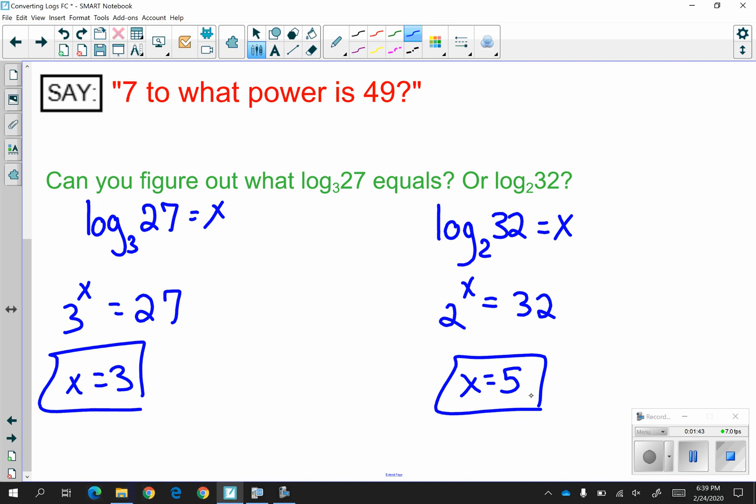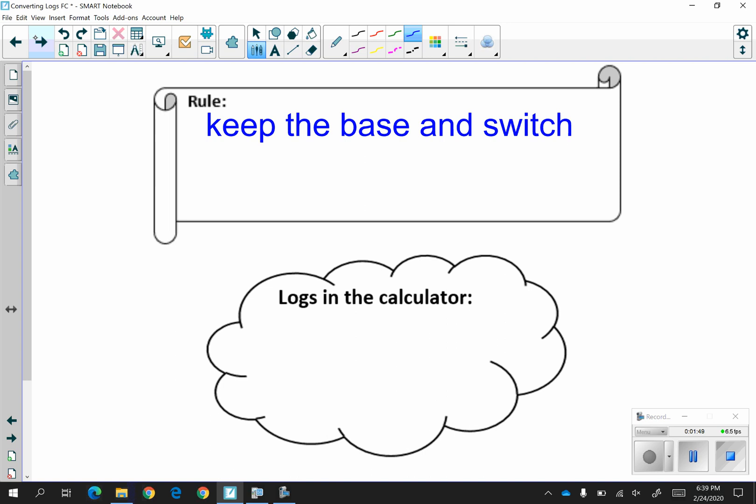Now there's an easier way than like saying it out each time. And the rule is going to be keep the base and switch. So let's say we had log base a of b is equal to c. If you want to convert this to an exponential equation, you're going to keep the base of a. That's going to become your base of the exponential.